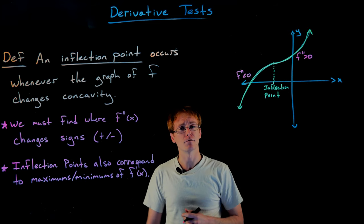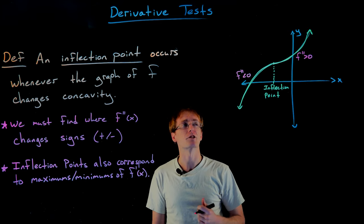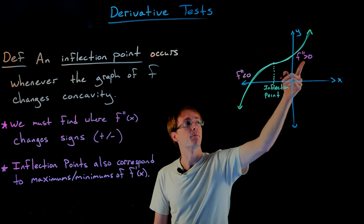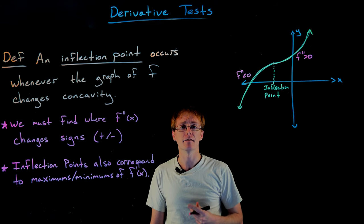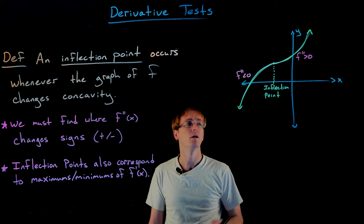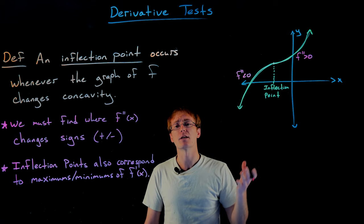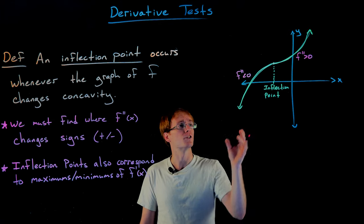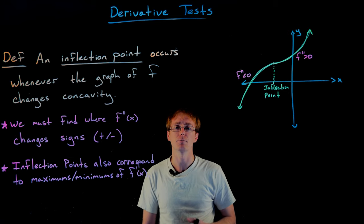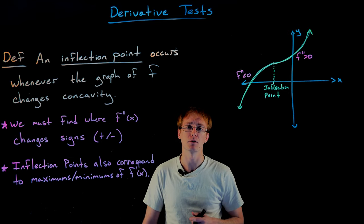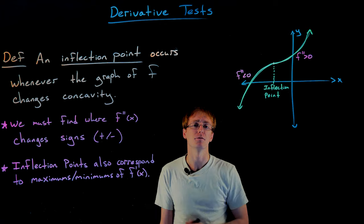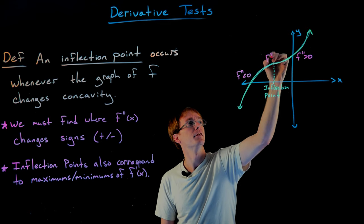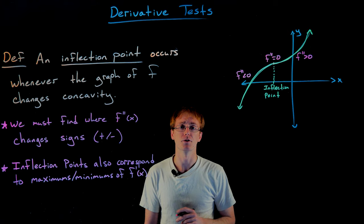So how do we start identifying where our inflection points actually occur? One way to switch from negative to positive or from positive to negative is by passing through zero. Similar to how we found the maximums and minimums of our function, we find inflection points by looking for where the second derivative is equal to zero — not the first derivative, but the second derivative.